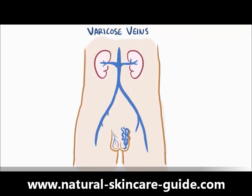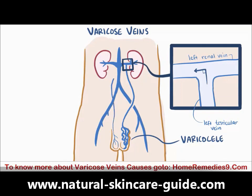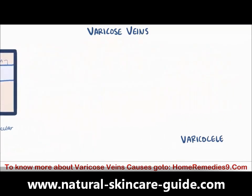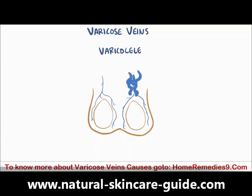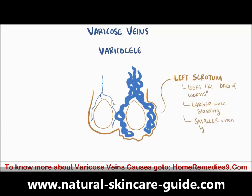Other than the legs, in men it can also occur in the scrotum, usually on the left side, where it's called a varicocele. This develops because the left testicular vein brings blood back to the left renal vein at about a 90 degree angle, while the right testicular vein drains directly into the inferior vena cava. Getting blood back up through a tight 90 degree turn isn't that easy, so blood backs up, and the backup of venous blood around the testicle causes the testicular vein to enlarge and get tortuous, where it starts to loop back and forth on itself, making the scrotum look like a bag of worms, which gets larger when standing and smaller when lying flat.